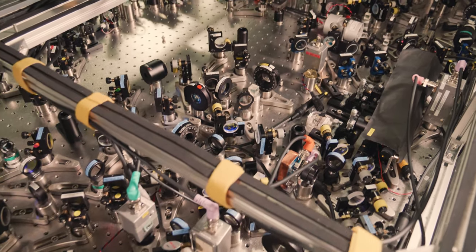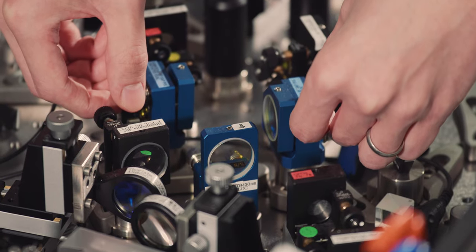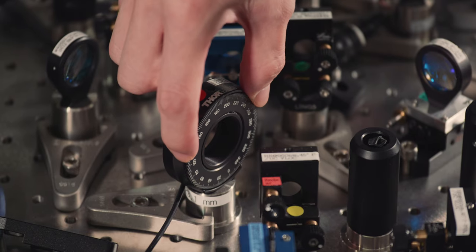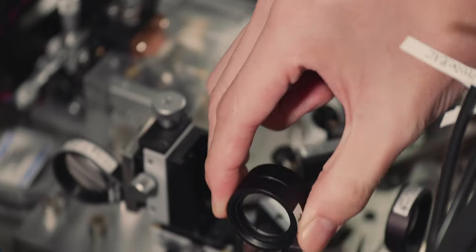Errors are an inevitable part of quantum computation, and we continue to find ways to efficiently correct for them. We have to optimize the position and angles of many hundreds of mirrors.